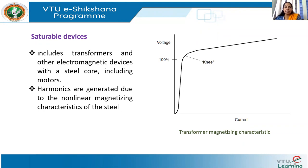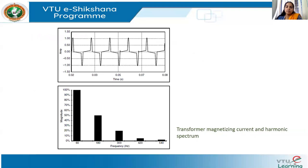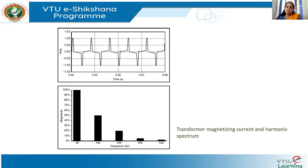Saturable devices mainly include transformers and other core electromagnetic devices, including motors. At times, motors can get saturated and become non-linear loads. The harmonics are generated because of the non-linear magnetizing characteristics of the core. A waveform showing the transformer magnetizing current and its harmonic spectrum reveals that although the supply and output are sinusoidal, the magnetizing current when measured has an almost pulse-like shape.